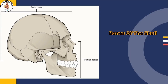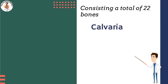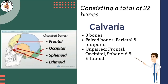The skull is composed of two main parts: the cranial and facial regions. The human skull has a total number of 22 bones, being paired and unpaired. The calvaria, or the brain case, consists of eight bones. Paired bones are parietal and temporal, whereas unpaired bones are frontal, occipital, sphenoid, and ethmoid.